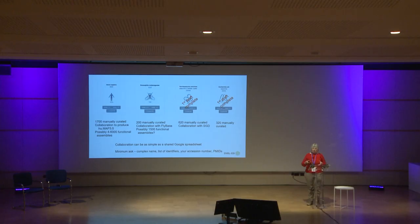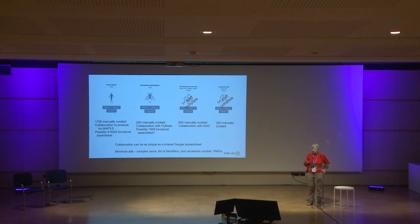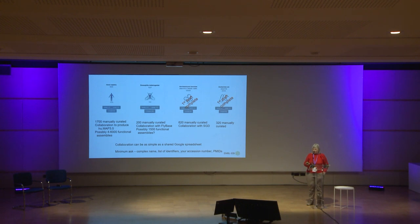We've been working on other species too. We started off with E. coli and yeast, partly because that gave us a baseline and a beginning point. We think we've got most of those complexes identified and curated — finding new ones only every couple of months now. For E. coli there are just over 300 complexes, and for Saccharomyces cerevisiae just over 600.